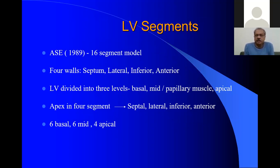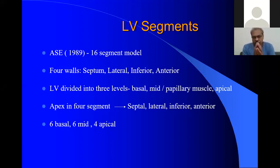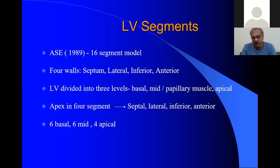When talking about echocardiography, the first consideration is wall motion abnormality. In 1989, the American Society of Echocardiography came out with a 16-segment model. Think of the left ventricle as a building: the ground floor has six segments, the first floor has six segments, and the top floor has four segments, totaling 16 segments. The basal levels are divided into basal and mid levels. More recently, a 17-segment model has been adopted with updated nomenclature.